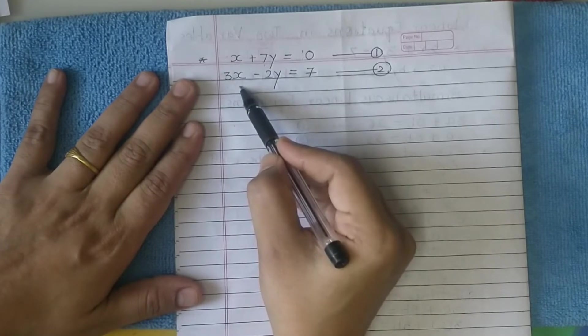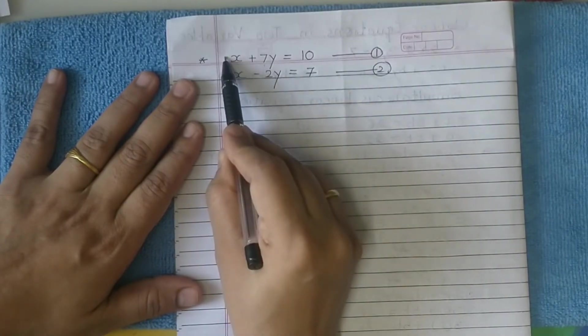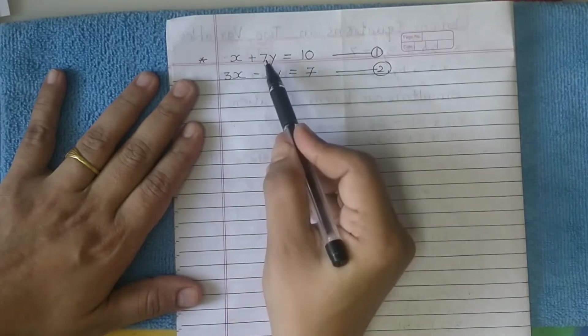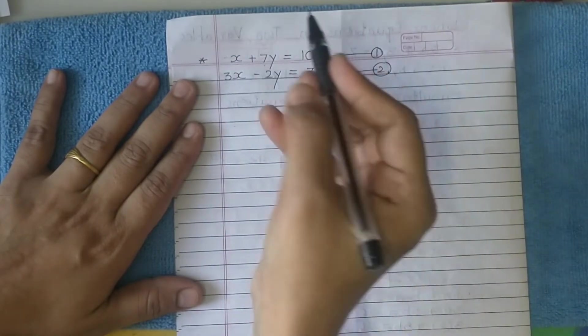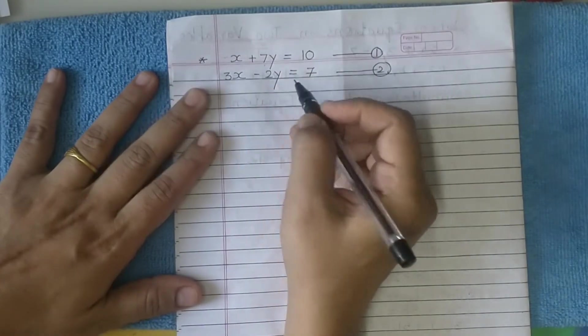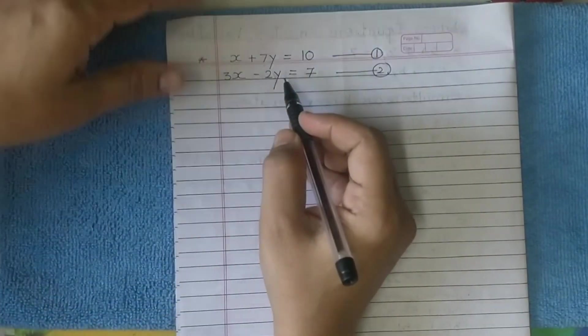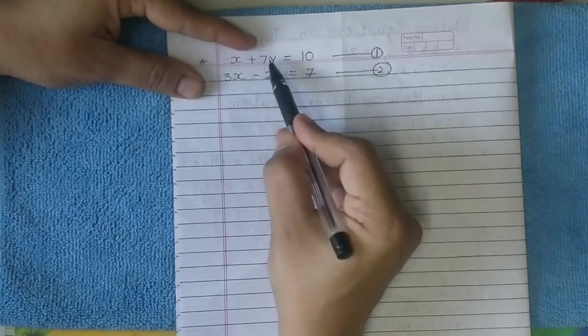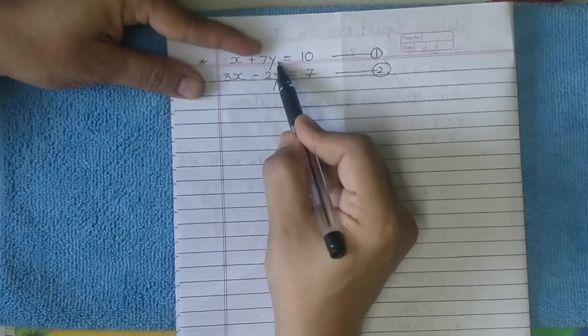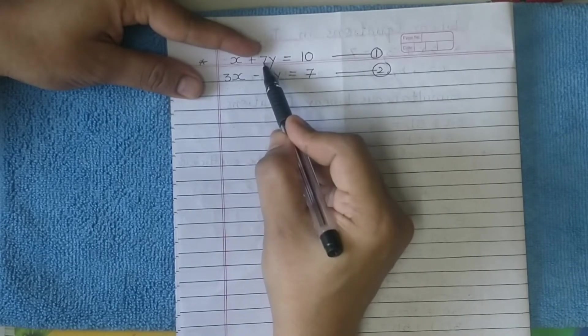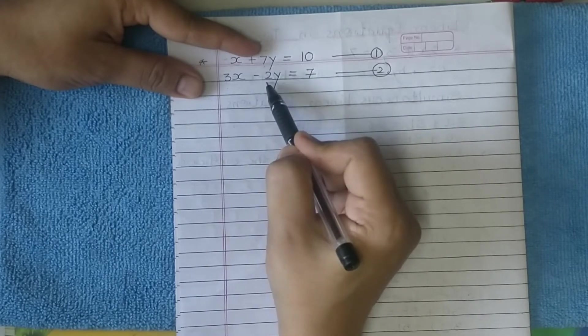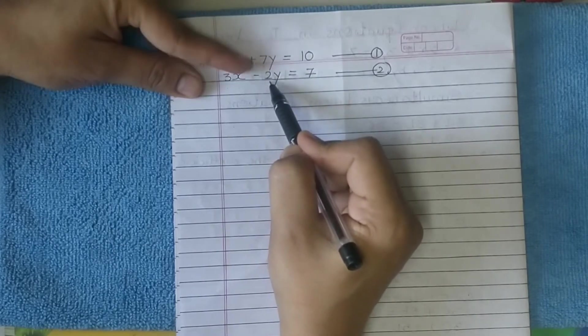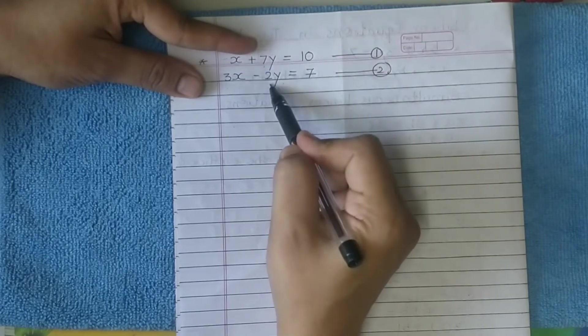Either you can equate the coefficient of x - in that case you'll multiply equation 1 by 3 - or you can work with y. I will select here to make coefficients of y the same. So for that, equation 1 has coefficient of y as 7 and equation 2 has minus 2. So I shall multiply equation 1 by 2. Remember, not minus 2, because this is going to help me - when the coefficients are made equal, I just add the two equations. I don't have to subtract.